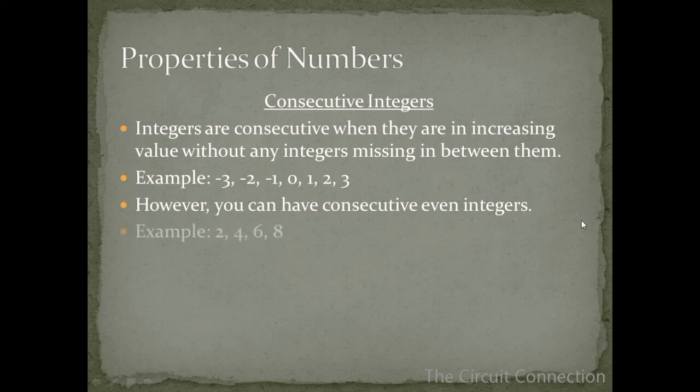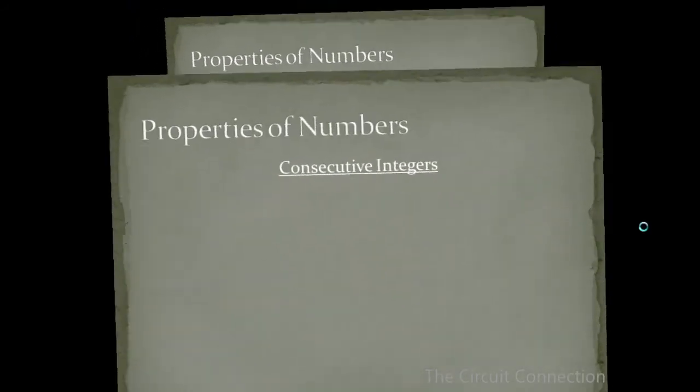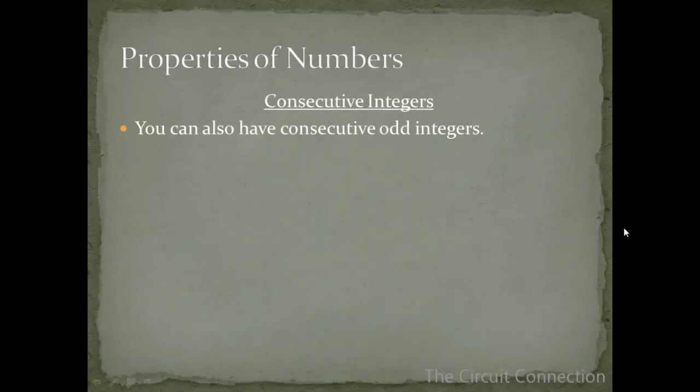However you can have consecutive even integers, so for example that can be 2, 4, 6, and 8. Now they do have numbers missing in between them but it's specified that they be even integers, so they're consecutive and they're even integers. It wouldn't be consecutive if I went from 2 to 6 to 8 because we'd be missing our 4.